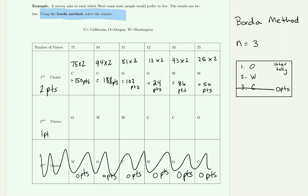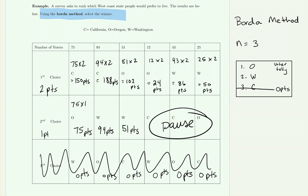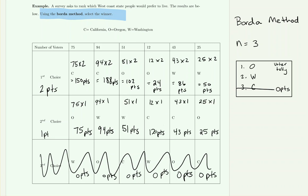Multiplying by one doesn't change the value, so 75 second-place votes contribute 75 points directly. There were 94 people who ranked Washington second, contributing 94 points, and 51 who ranked Washington second in another column, giving 51 more points. Pause the video and fill in the remaining three second-place cells.